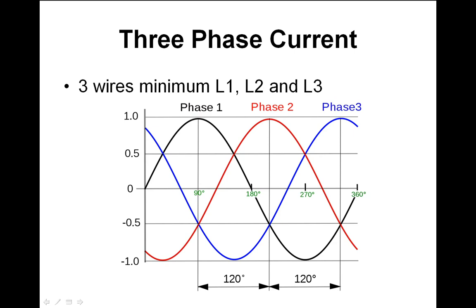The first thing we need to look at is three-phase current. I'm sure you've seen this graphic before. We've got three phases, sometimes referred to as L1, L2, and L3 — L stands for live. When you look at this diagram, we've got zero volts here and the peak voltage here, which would typically be about 339 volts.